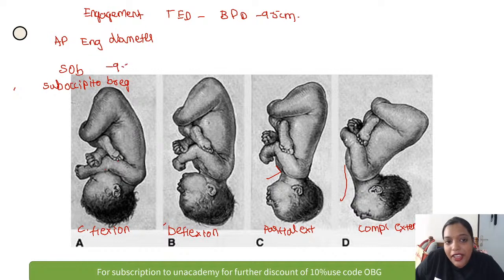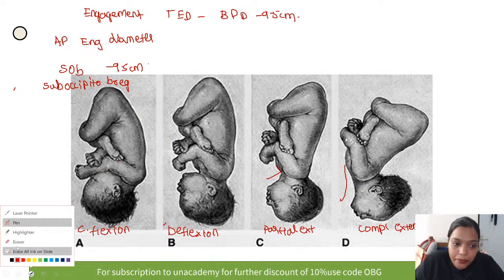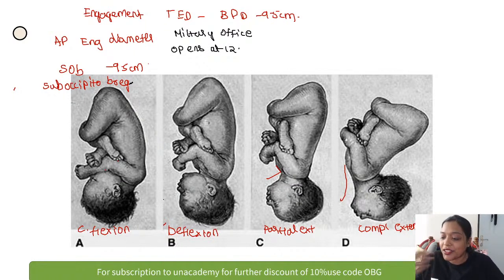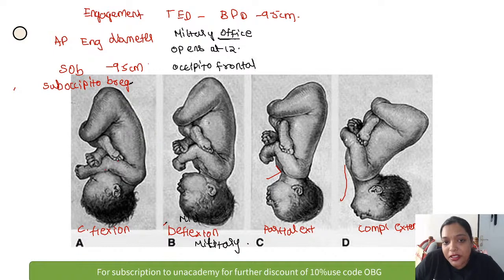The boy is crying and has decided to join the military office. The second mnemonic: 'Military office opens at 12.' Military position = occipitofrontal diameter = 12 cm.